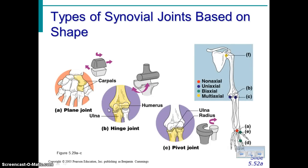The last part of this lecture looks at the types of synovial joints based on their shape. In a plane joint, two rather flat surfaces slide by one another. In a hinge joint, the joint works like a door and moves in one plane. In a pivot joint, you have a ring and a sleeve, and the ring rotates within that sleeve — we saw that when we looked at the elbow joint with the skeletons.